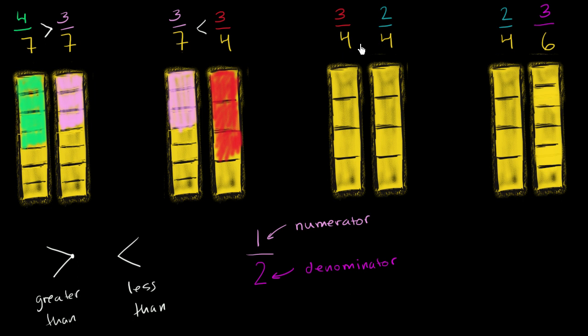Now let's compare these two. We have the same denominator, different numerators. 3 fourths versus 2 fourths. Well, 3 fourths we've already looked at. We can just shade in three of these. So three of these fourths. So that's 3 fourths right over there.